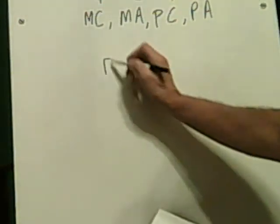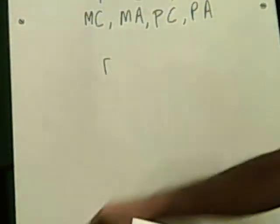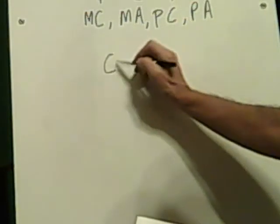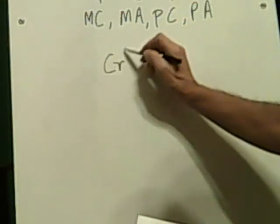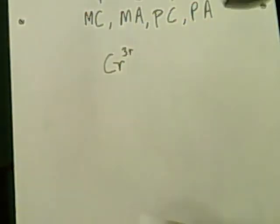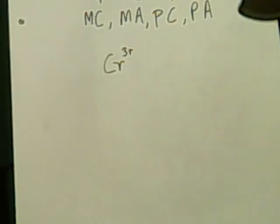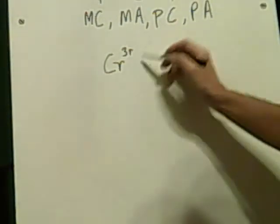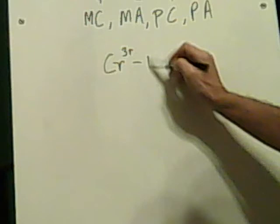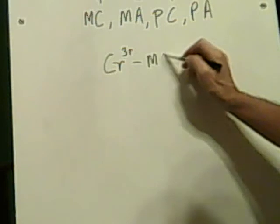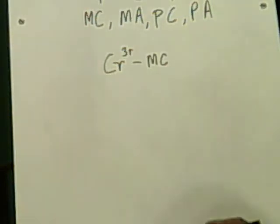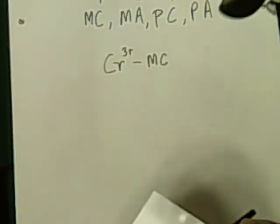The first one is Cr3+, that's chromium with a positive 3 charge. That's monatomic and it's a cation, because it's positive — chromium is a metal.